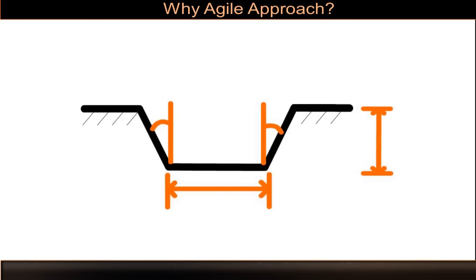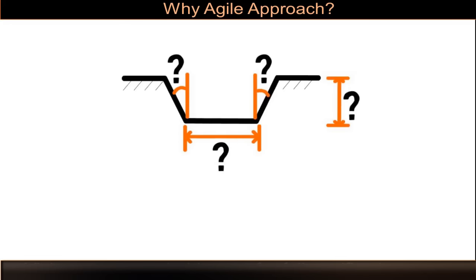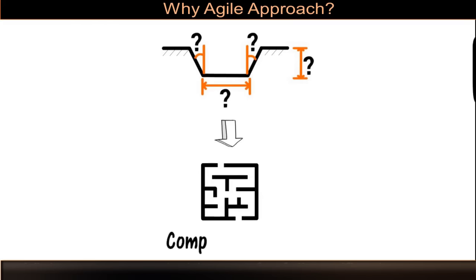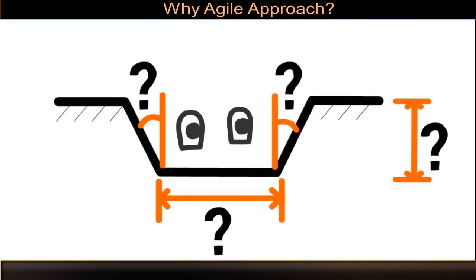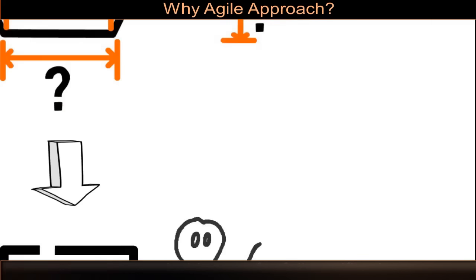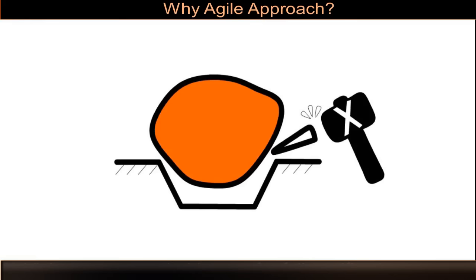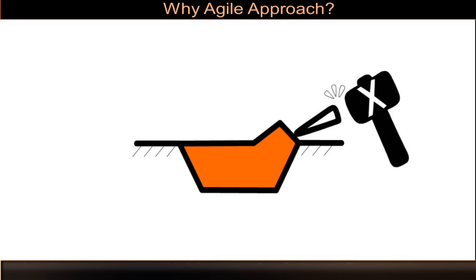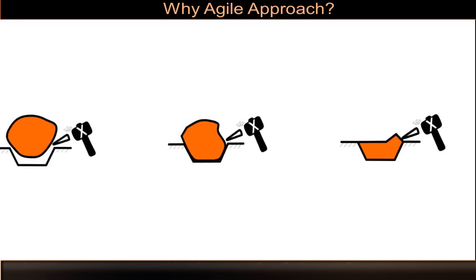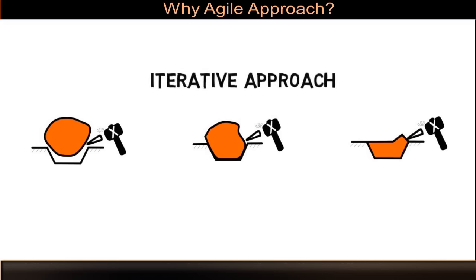If we don't know the dimensions of the pothole, then it becomes a complex problem. In this case, how do we solve the complex problem when the requirements are not known at the start of the project? In the same example, assume you don't know the dimensions of the pothole. Therefore, you decide to chisel out the shape to fill the gap. You go on refining the shape by carving and cutting it over and over again. This is called the iterative approach.